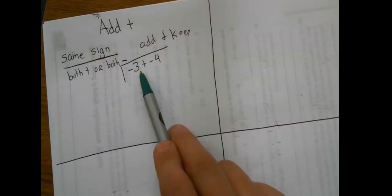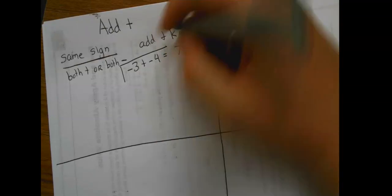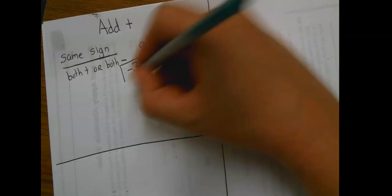So same sign. What does the same sign mean? Same sign means that they're both positive or they're both negative. If they're both positive or both negative, we're going to add them and keep the sign. So an example of that would be like negative three plus negative four. Negative three plus negative four, they're both negative, so I say three plus four is seven, and I keep that negative.